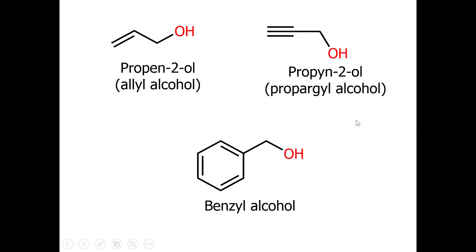These are examples of some unsaturated alcohols. When the sp3 carbon bonded directly with the OH is also bonded to an olefin or double bond, it is known as allylic alcohol. Similarly, if this sp3 carbon is directly bonded with a benzene ring, it is known as benzylic alcohol, which is also known as aromatic alcohol.